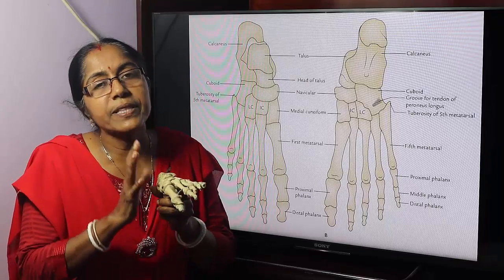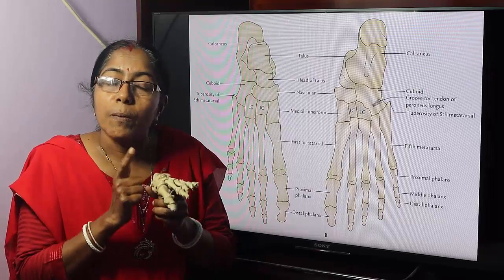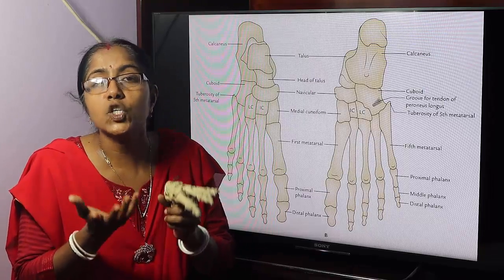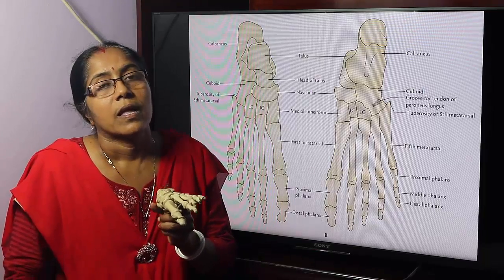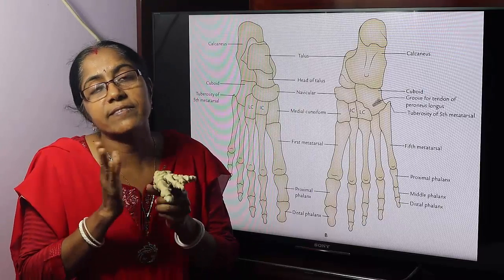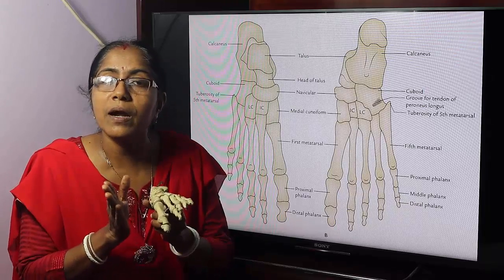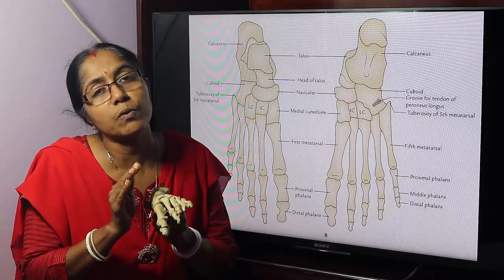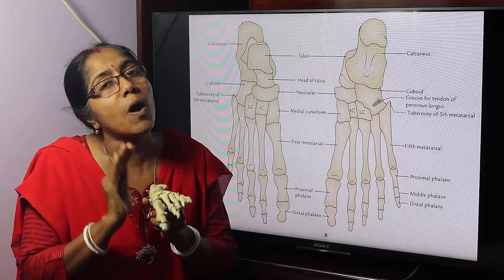What are the joints between the tarsal bones? Morphologically, the tarsal bones are short bones. What are the characteristic features of short bones? They are cubical in shape. They have six surfaces, among which four are articular and two are non-articular. They are composed of spongy bone covered by a thin shell of compact bone.